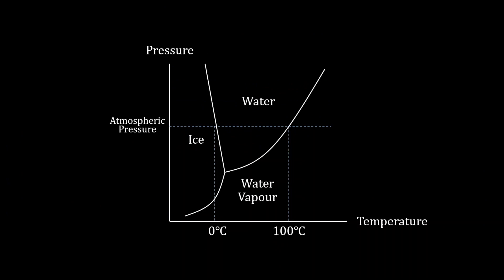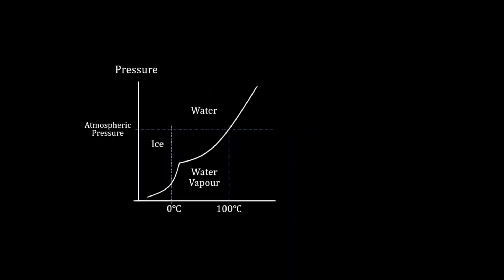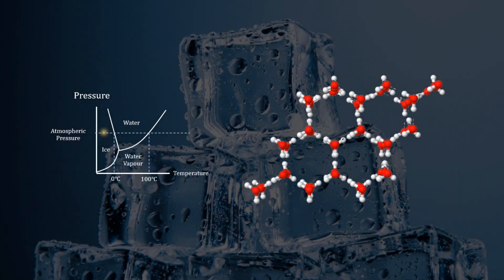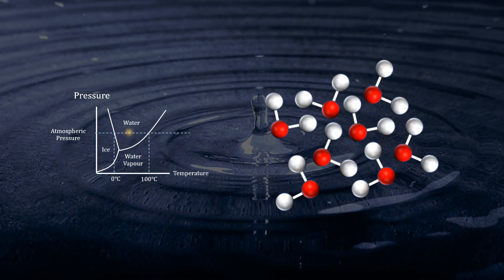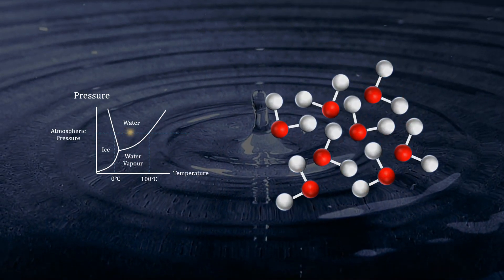As a substance transitions from a solid to a gas, its molecular arrangement undergoes a significant transformation from the highly structured and closely packed lattice of a solid to the less structured and more densely packed liquid, and finally to the unstructured and widely spaced gas state.